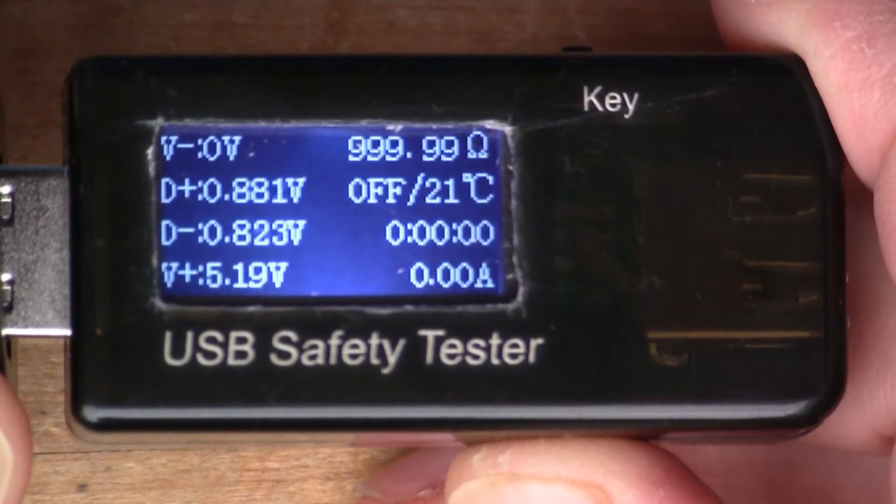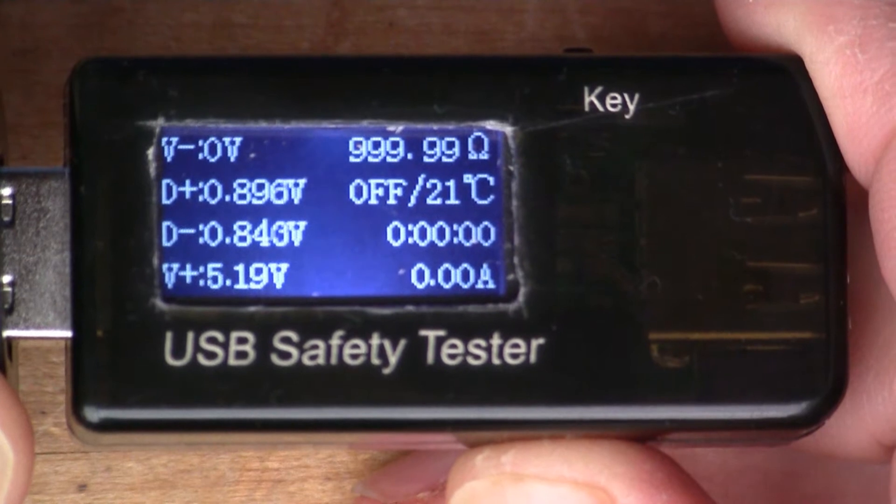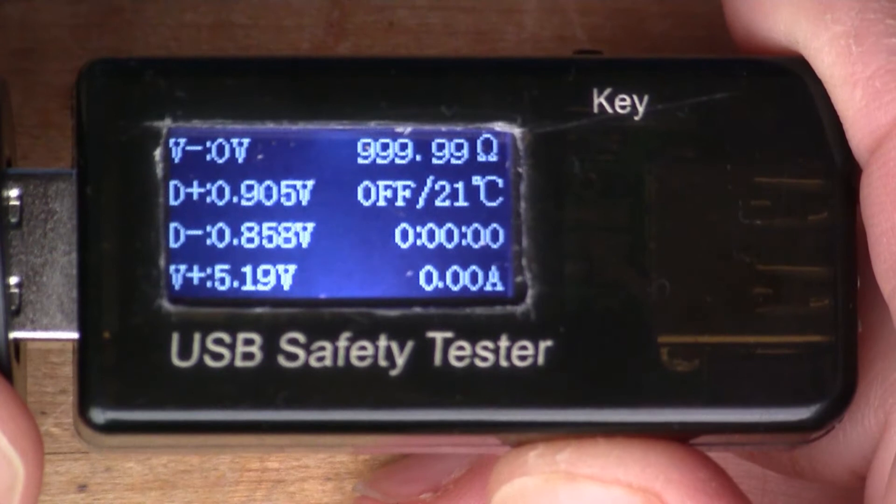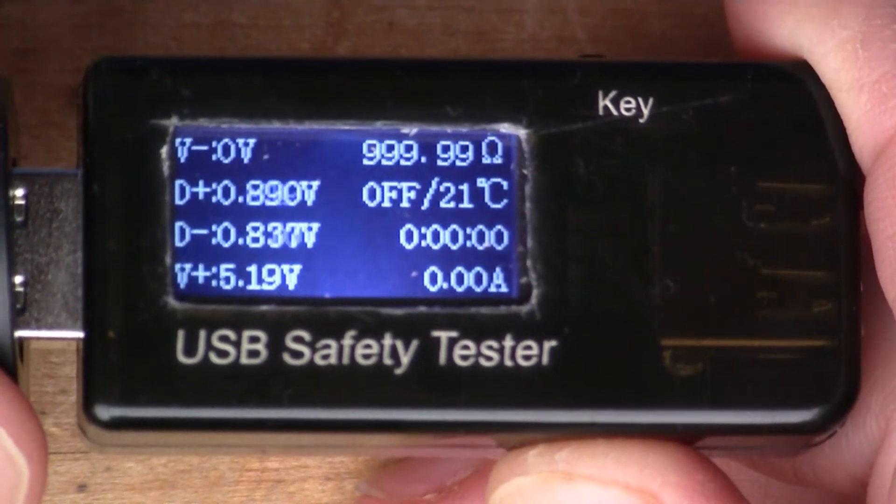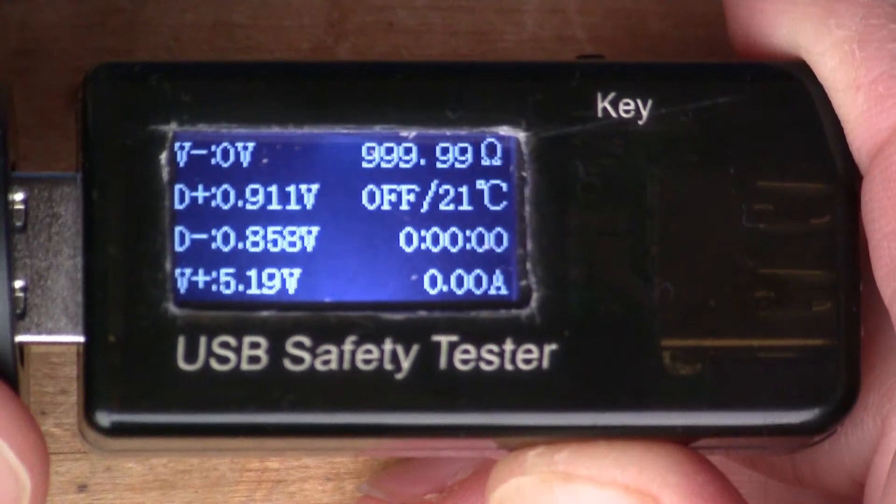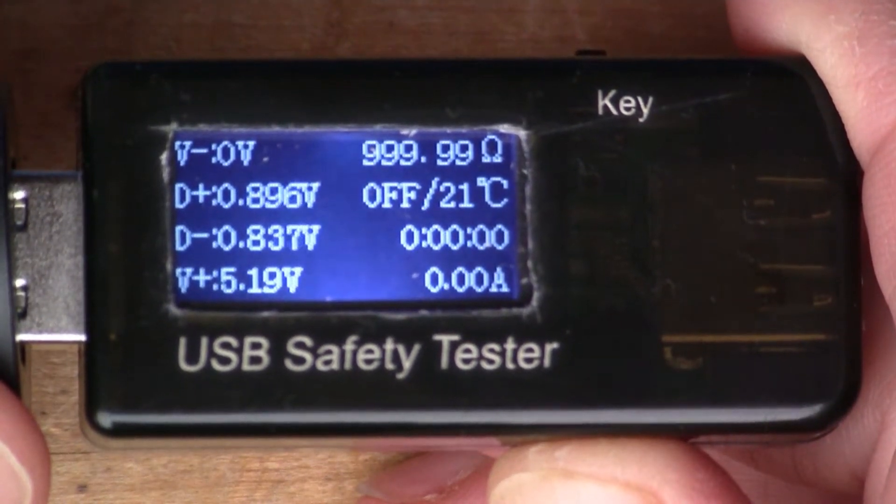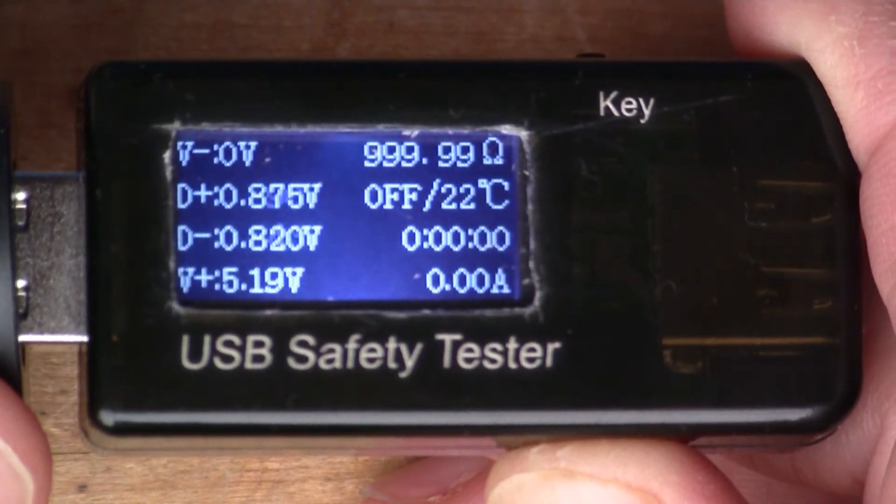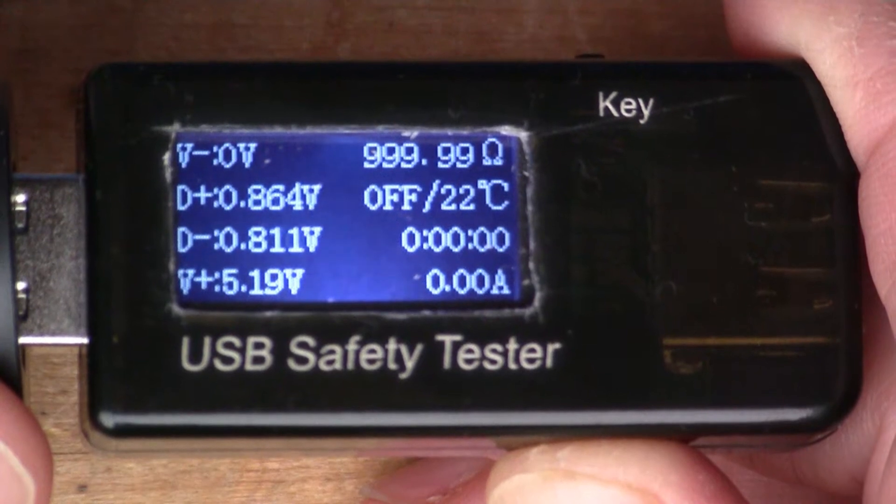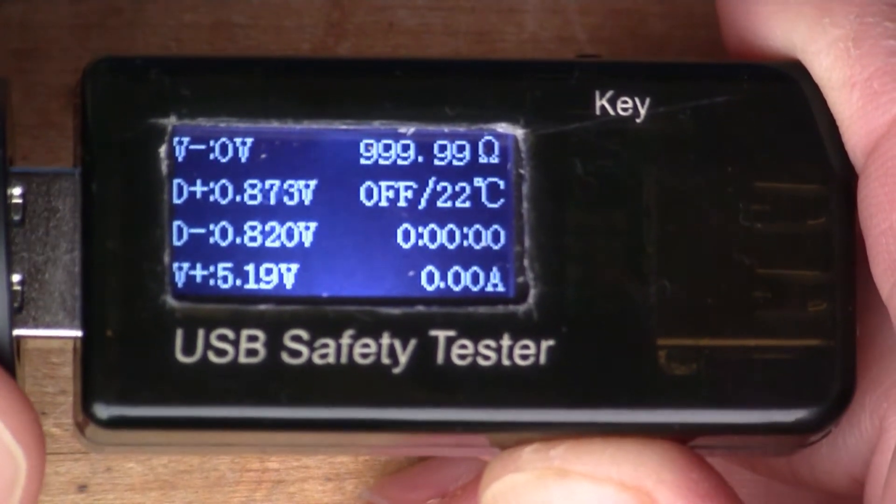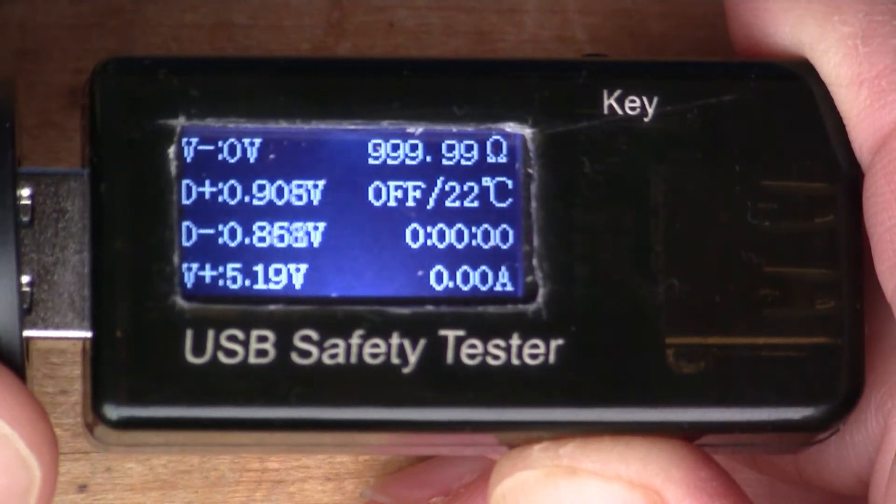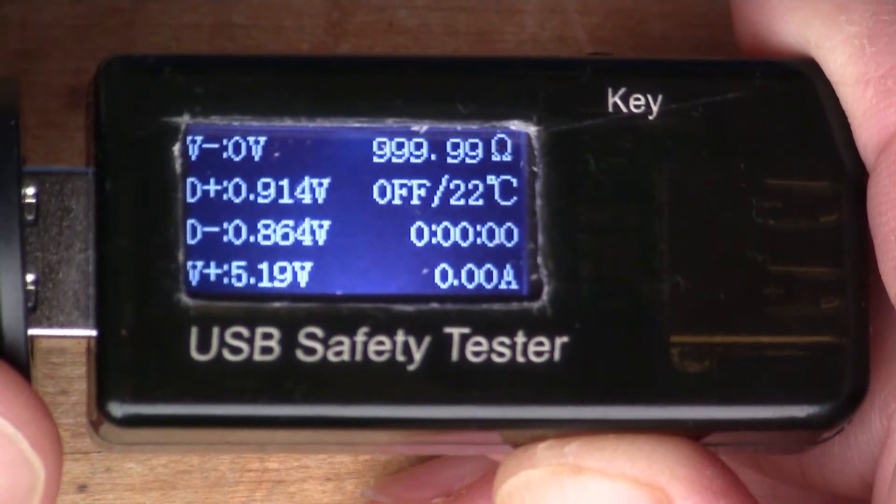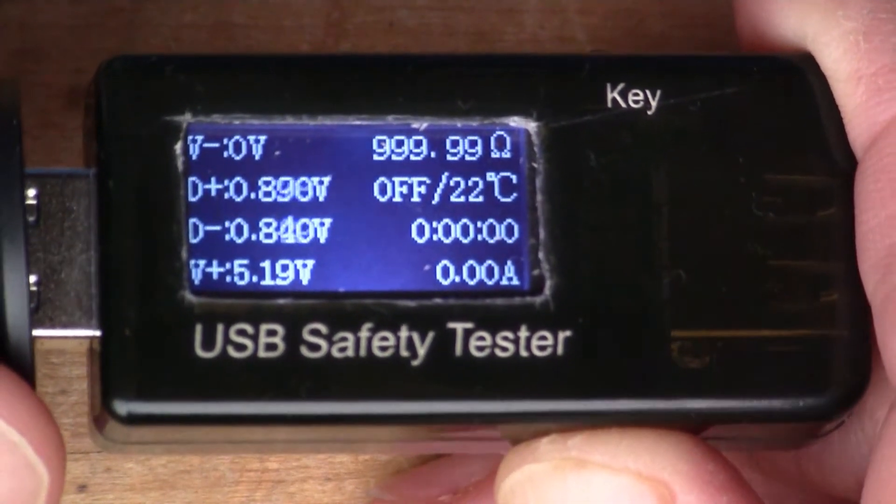That's reading five point one nine volts. One good thing about this particular model is it gives you readings on the D plus and D minus pins, which as I said in a previous video, are often used to signal to the mobile phone how much current it can draw. Here the D plus and D minus is about point nine volts, which isn't any particular recognized value.